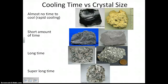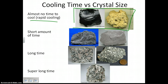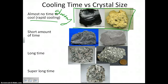Cooling time versus crystal size is a very important concept in terms of igneous rocks. Here I've shown you a chart that indicates different types of rocks and their cooling time. These rocks at the top had barely any time to cool — we call this rapid cooling. This indicates that they're going to have what's referred to as a glassy texture. Glassy just means they do not have crystals — notice no crystals here and also no crystals here.